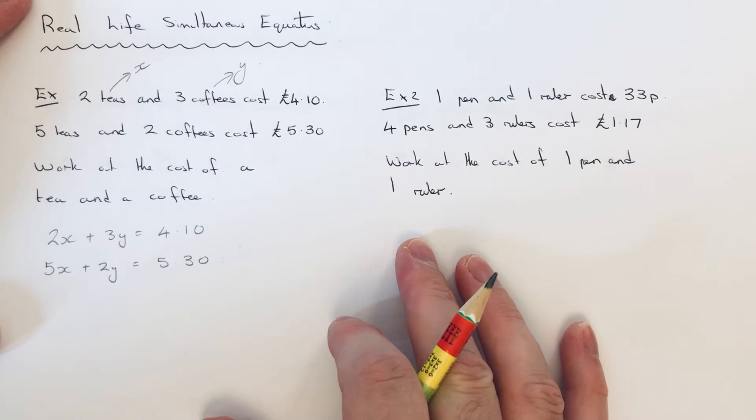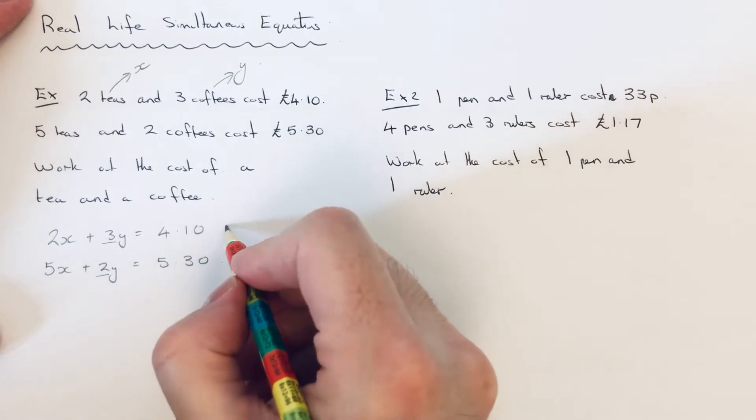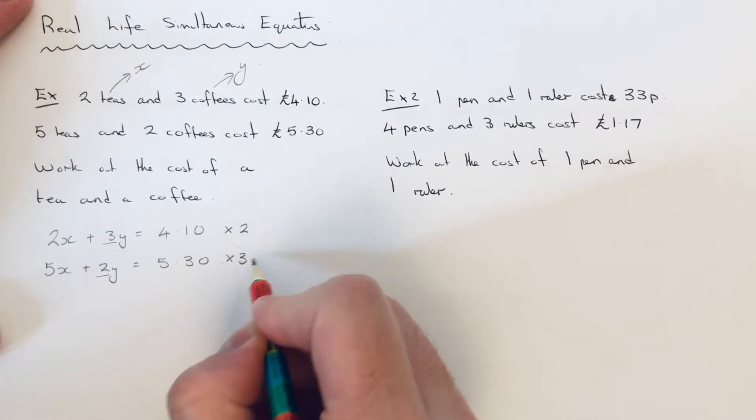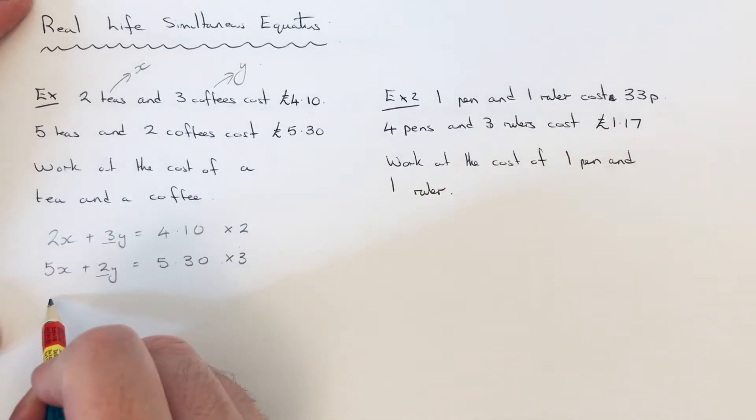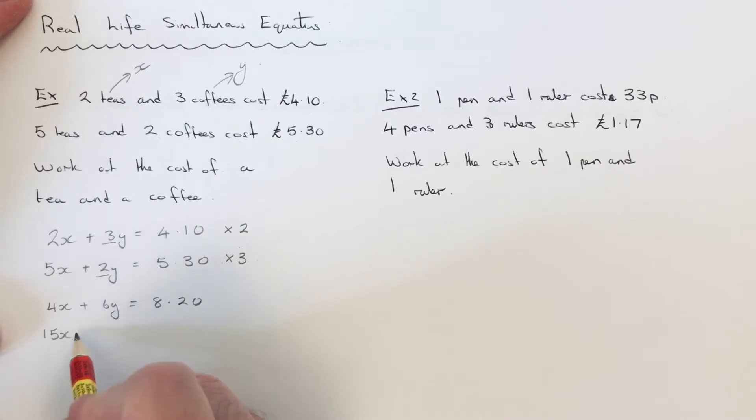So what we're going to do then is make the y numbers the same. So the lowest common multiple of 3 and 2 is 6. So that means I need to times the first equation by 2 and the second equation by 3. So if we times the first one by 2, we get 4x plus 6y equals £8.20. And if we multiply the second equation by 3, we get 15x plus 6y equals £15.90.